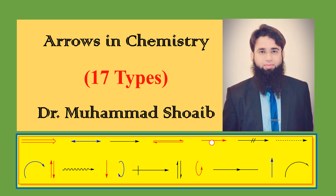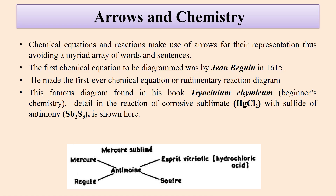Hello everyone, it's me Dr. Muhammad Schwab, and today I will discuss a different and general topic: arrows in chemistry. There are around 17 different types of arrows which are used differently. There is an old adage that a picture speaks a thousand words. Chemical equations and reactions make use of arrows for their representation, thus avoiding a myriad array of words and sentences. Thus arrows form an integral part in the expressions of chemistry.